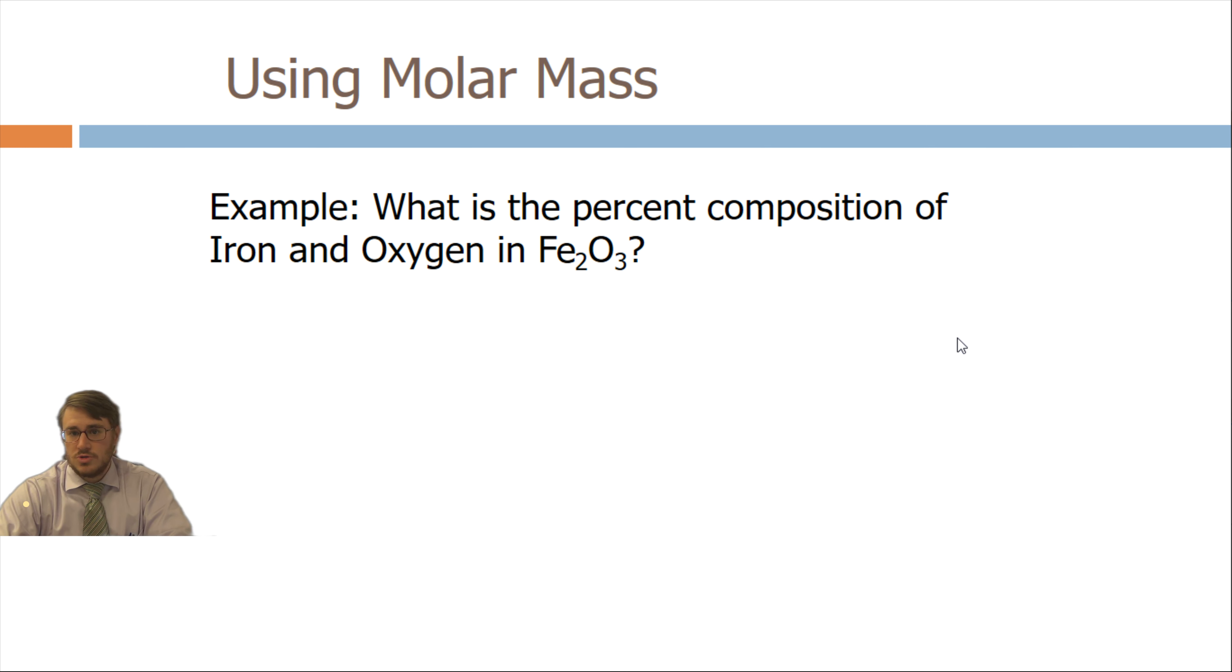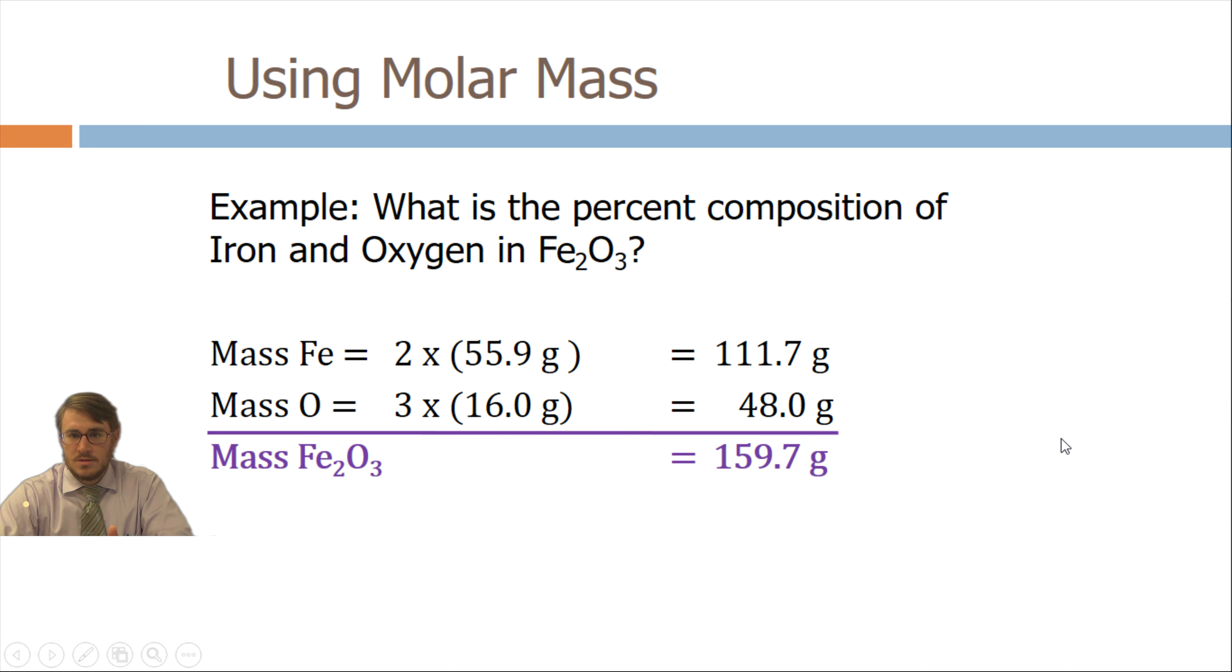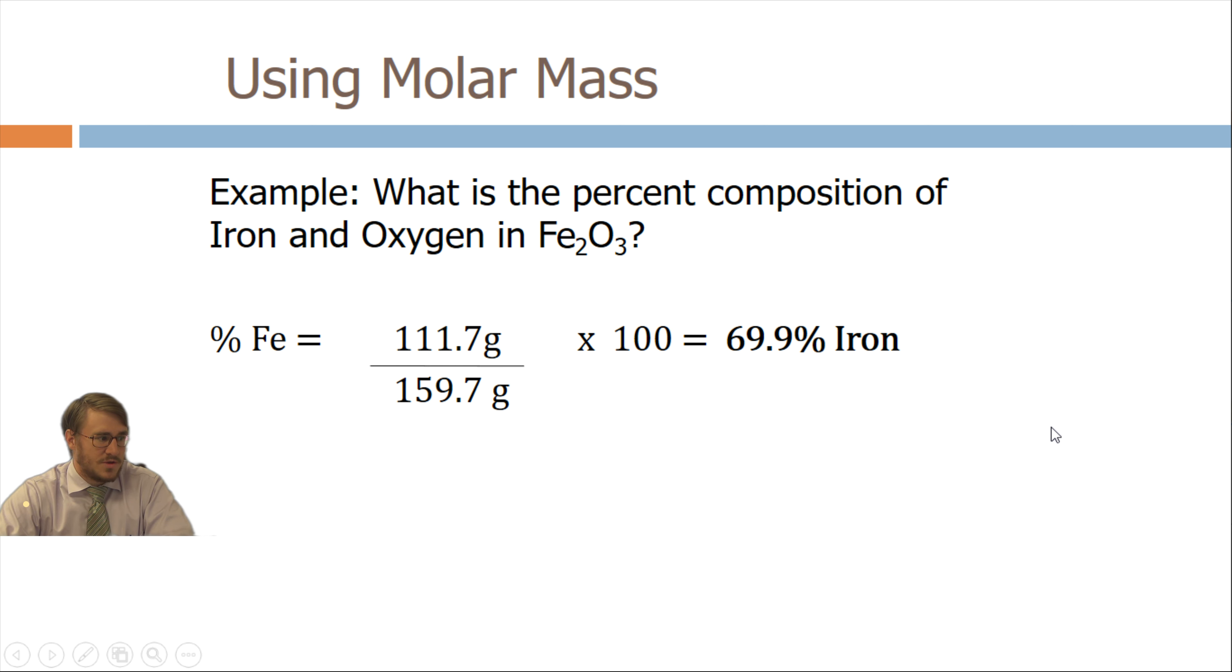Percent composition is you do the molar mass like you normally would. Add it up like you normally would. Fe2O3. Each Fe is 55.9. There's two of them. Each oxygen is 16. There's three of them. Multiply, add them straight up. It's 159.7. That's not new. The percent composition part is where you take the part that is Fe and divide it over the whole. The part that is oxygen and divide it over the whole. So that we get the percent composition of each part.